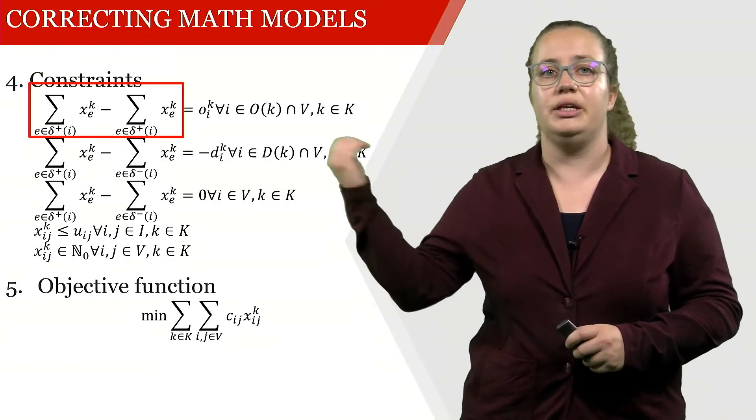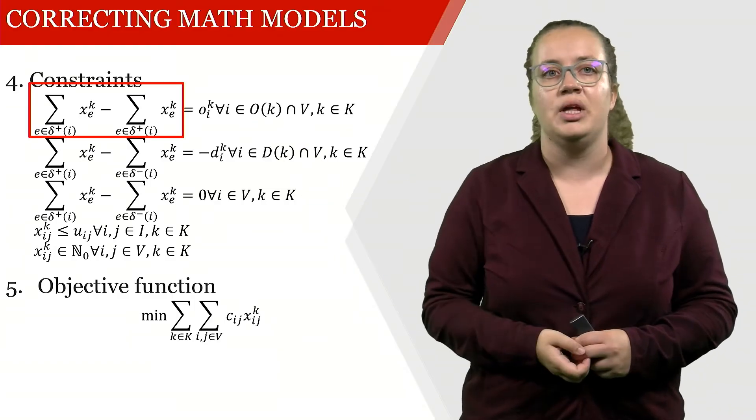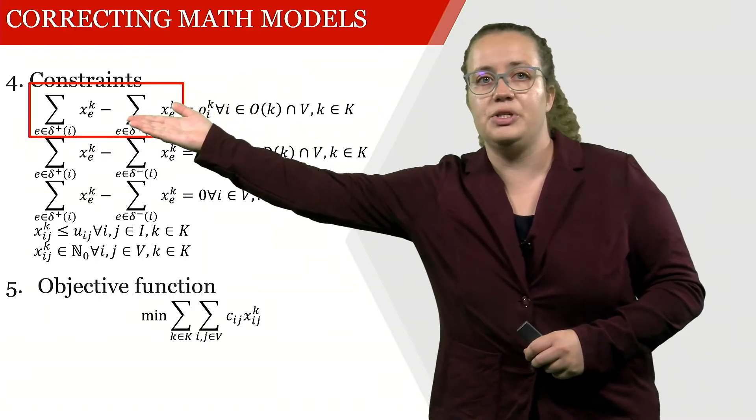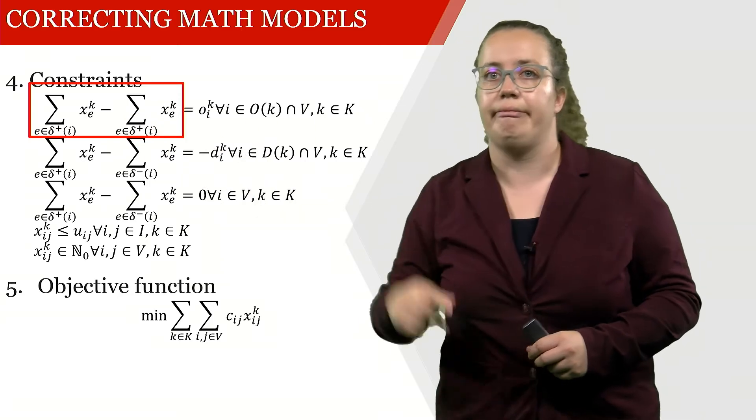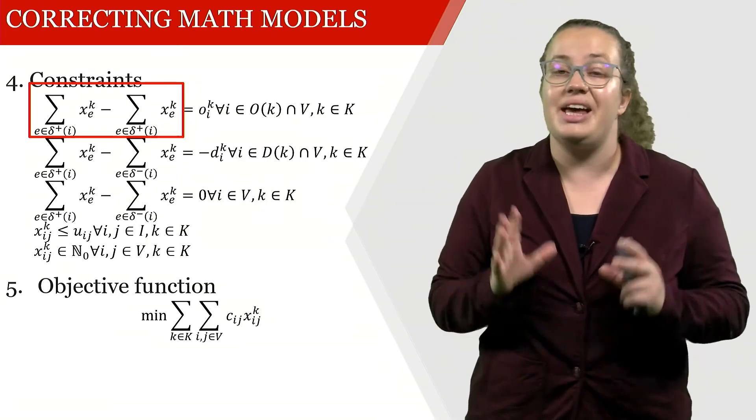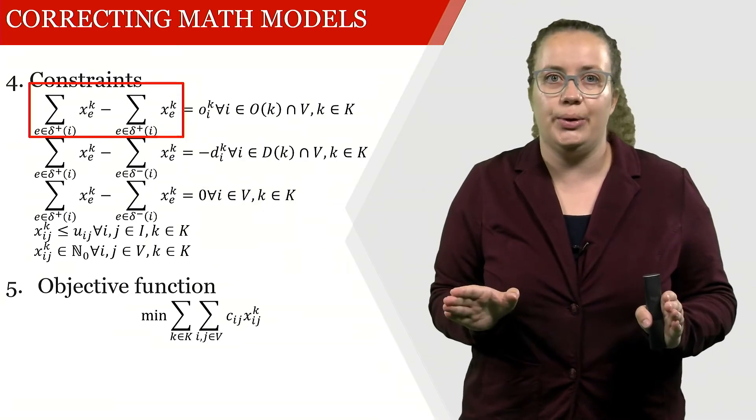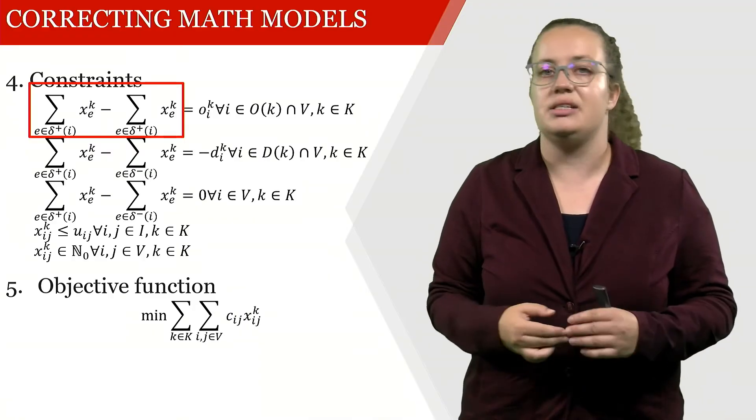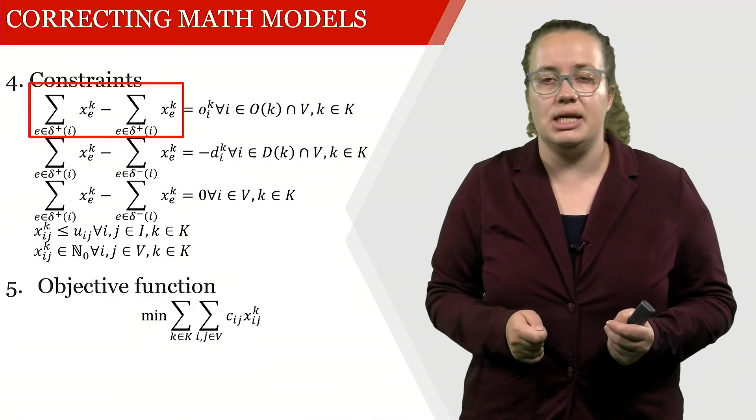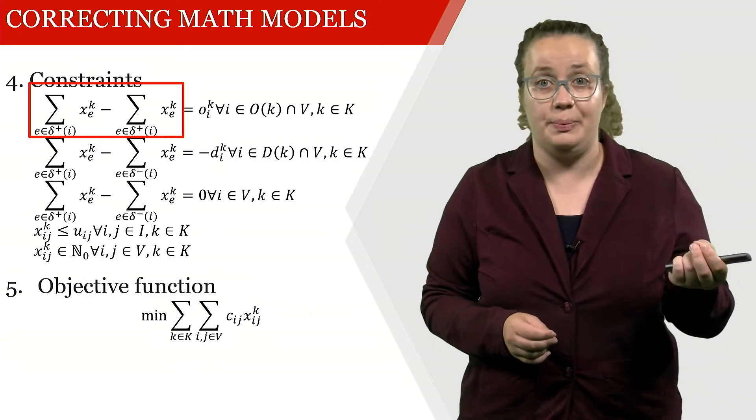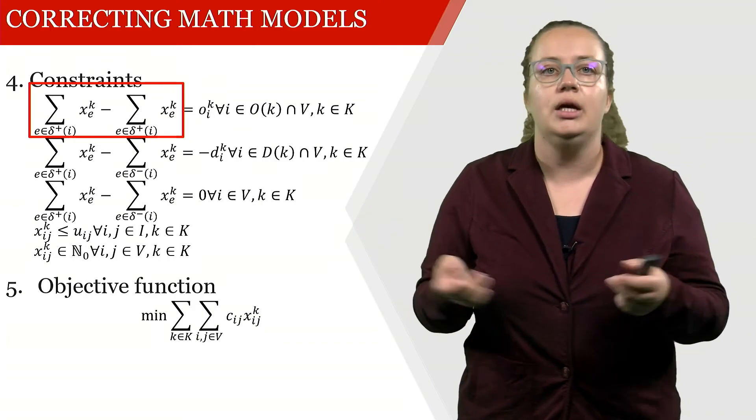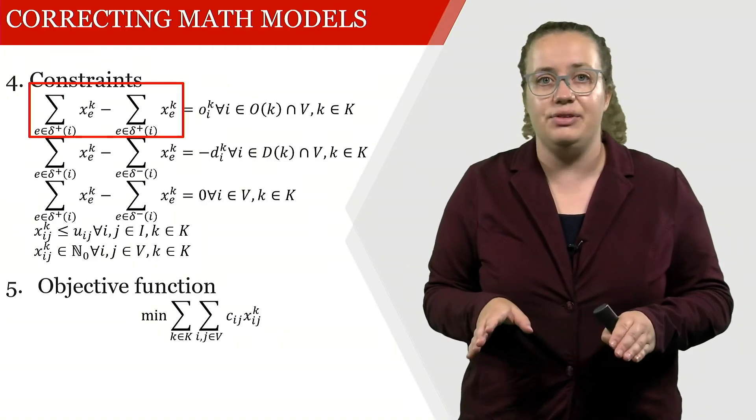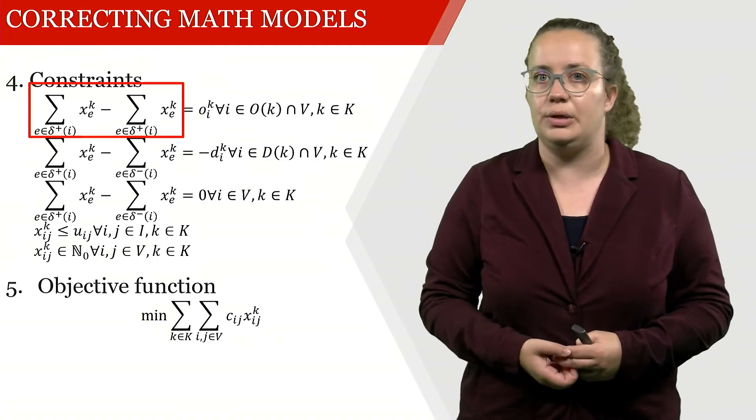First, we're going to look into this first constraint. If you look here on the left, what we're doing is we're practically subtracting something from the same. So whatever our x variables are going to be, this part is going to be zero. And what we're now saying is that our supply, which is a parameter, is equal to zero. So this will inevitably result in this mathematical model not working.